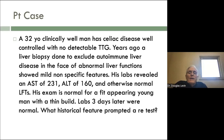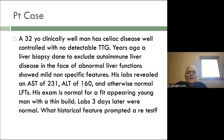Case four: a 32-year-old clinically well man with celiac disease, well controlled with no detectable TTG. Years ago, a liver biopsy done to exclude autoimmune liver disease showed mild non-specific features. His labs revealed AST of 231, ALT of 160, with otherwise normal liver chemistries. His exam is normal for a fit-appearing young man with a thin build. Lab three days later was normal. What historical feature prompted a re-test? Exercise. This is a great example of somebody who's basically healthy, who works out, and you think his liver disease is getting worse — but it almost certainly is not. Always think about other sources, because these tests are not very specific.